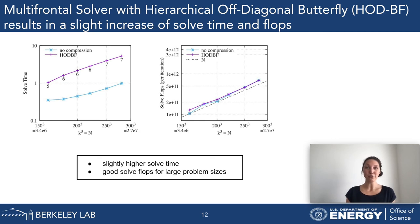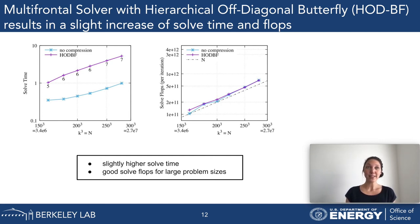The factorization times are in the hundreds of seconds while the solve time is just a couple of seconds, so the increase does not influence the overall result much. In general, the combined factorization and solve times for HODBF are much better than for no compression at all.